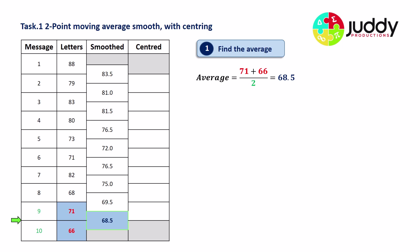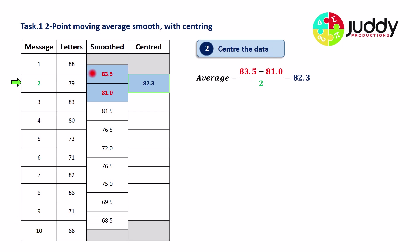Centering is a simple step: we average out our two adjacent smooth points. Our first two smooth values were 83.5 and 81.0; averaging these gives 82.25, which can now be centered against message number two. So 88 and 79 gave 83.5, and 79 and 83 gave 81; averaging those two gives the centered value at message two.